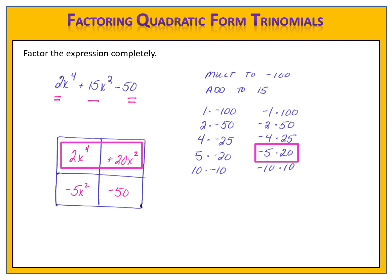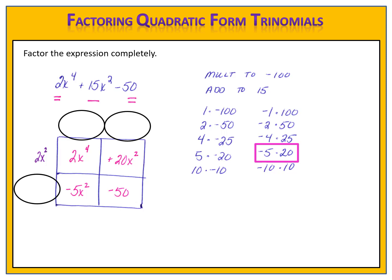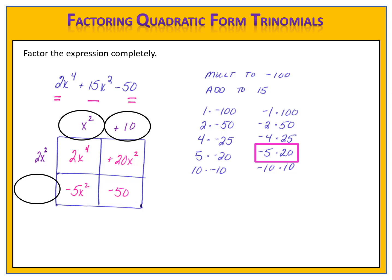I look for the greatest common factor across the top. The greatest common factor of 2x to the 4th and 20x squared is 2x squared. I use multiplication to fill in the other spots around the grid. 2x squared times x squared gives me 2x to the 4th. 2x squared times 10 equals 20x squared, so I put plus 10. Then x squared times negative 5 equals negative 5x squared. 10 times negative 5 is negative 50 — that checks out.